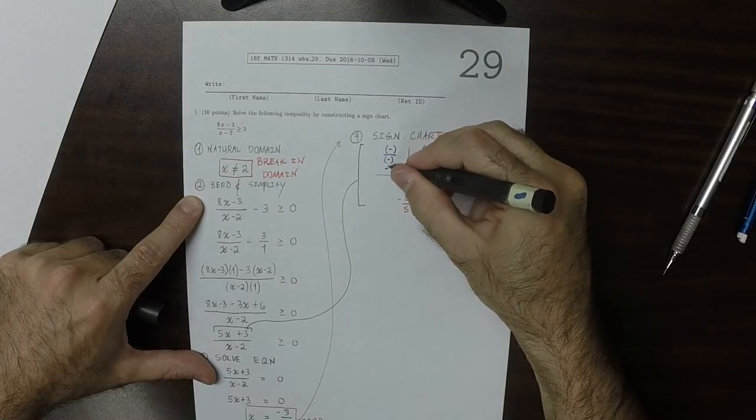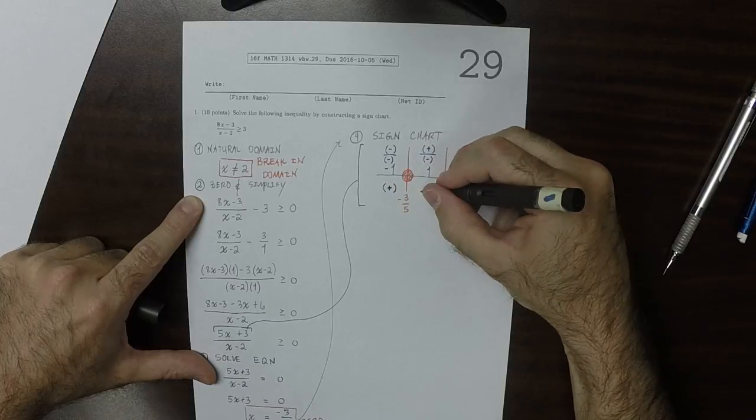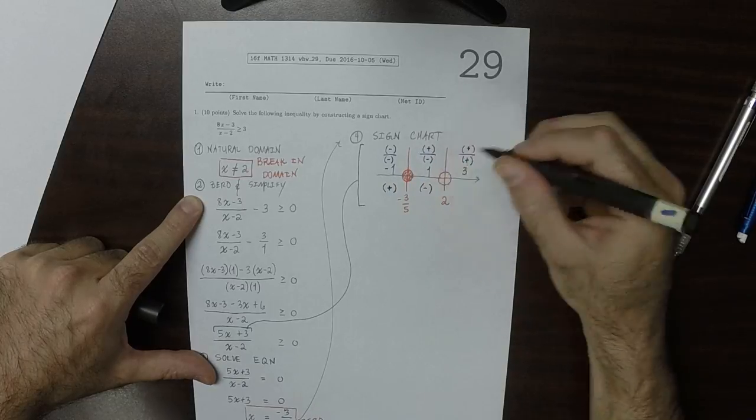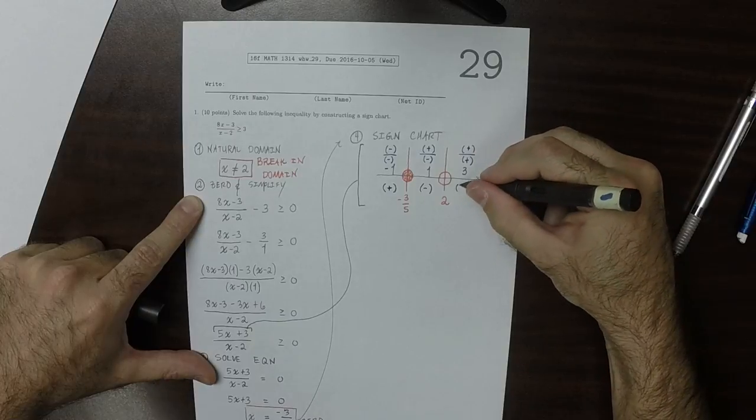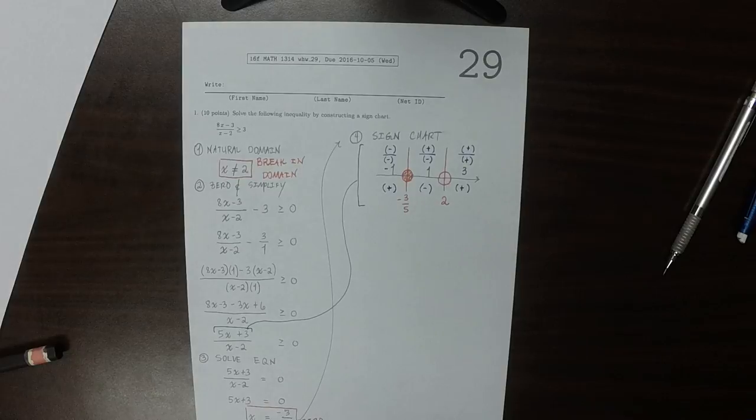And then now we can figure out the overall sign in each region. So negative over negative, that's positive. Positive over negative, that's negative. And positive over positive, that's positive.